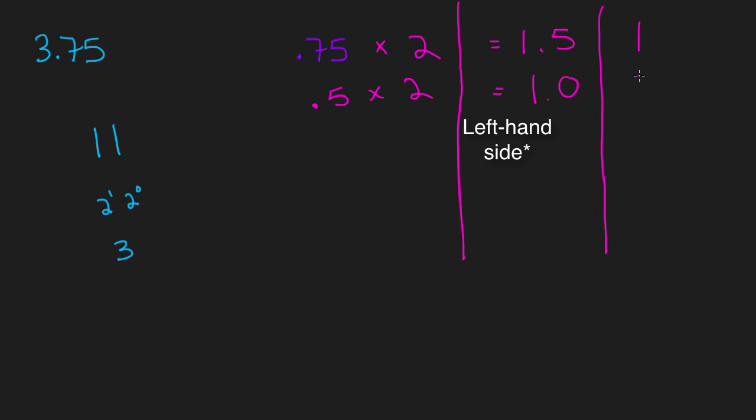Okay, well we have a one on the right hand side of the decimal, so we're going to put a one here. And then we're going to take everything after that decimal and multiply it by two. So here in this case it's zero, and we know 0 × 2 = 0.